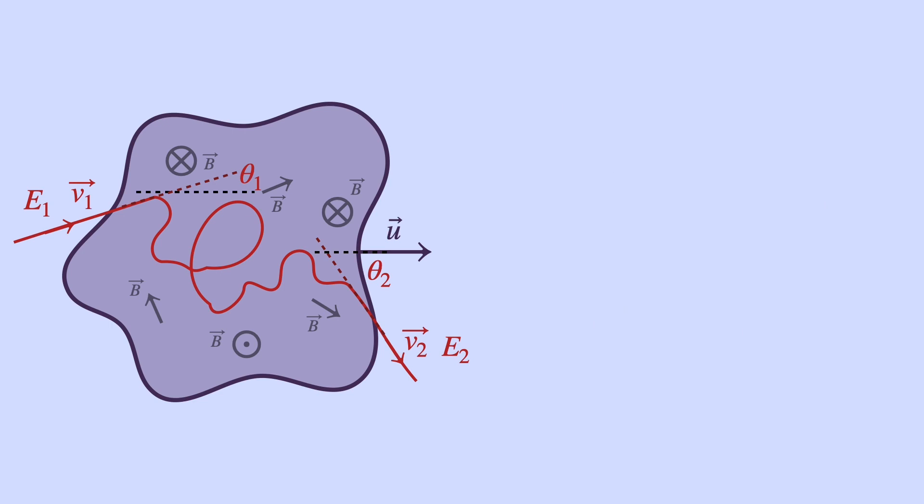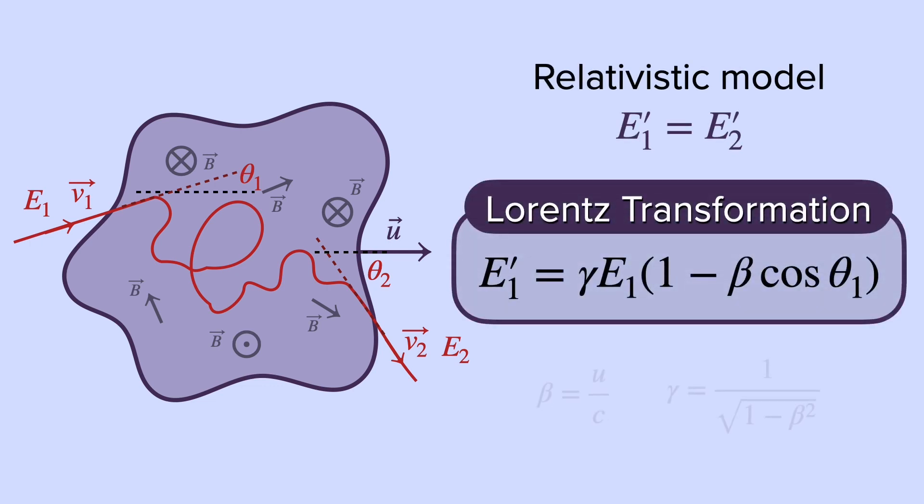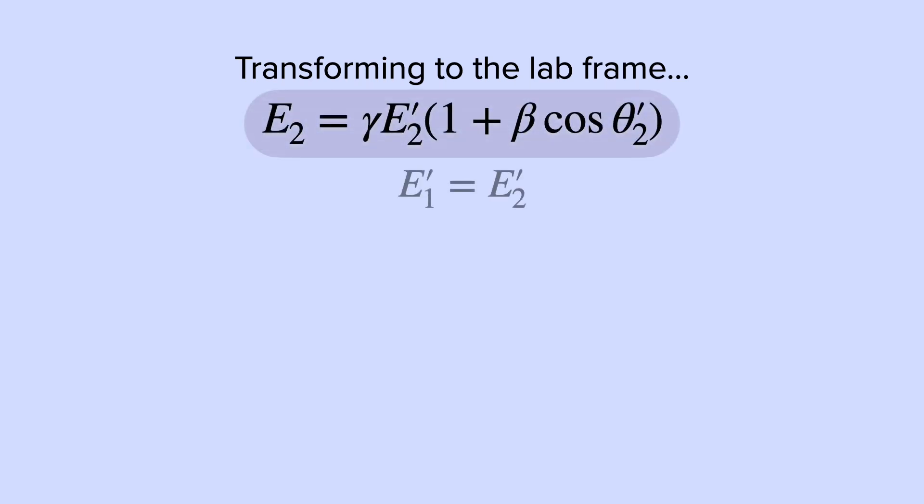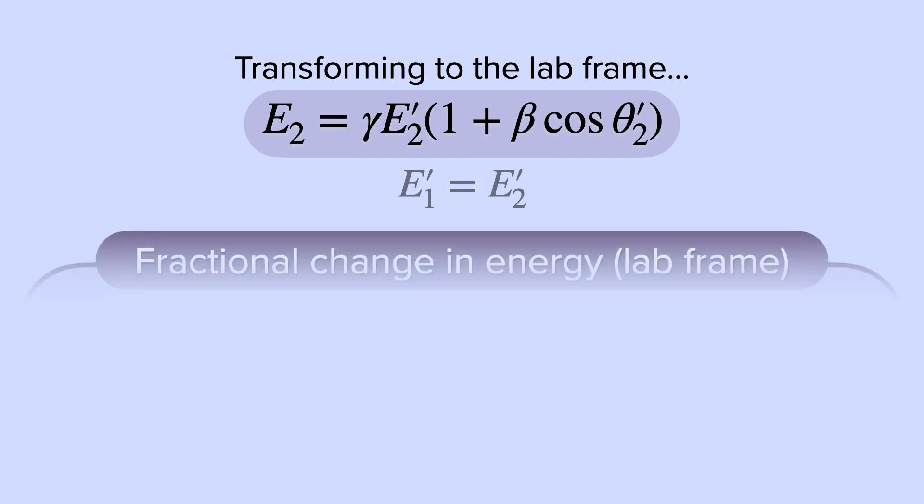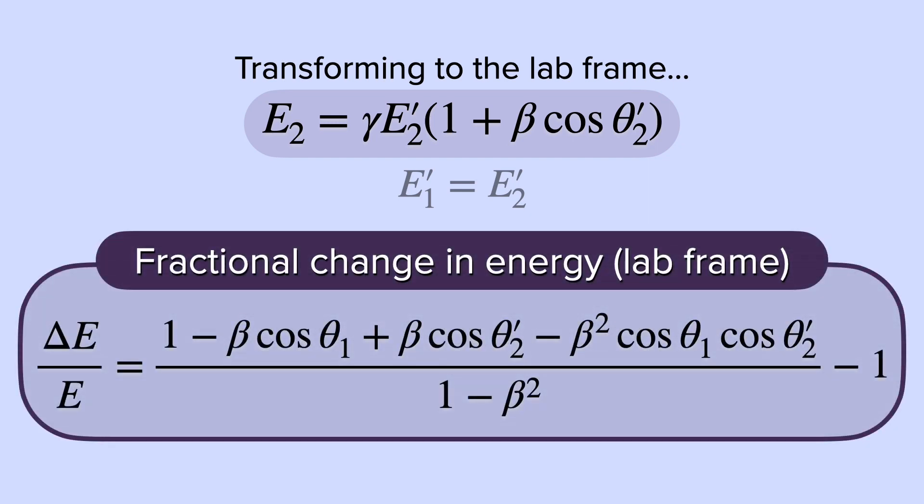We can work with a relativistic model where the energies in the cloud frame remain the same. And we can write a Lorentz transformation. We can transform to the lab frame and get the outgoing energy.